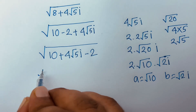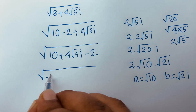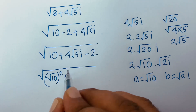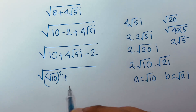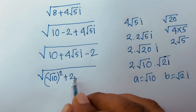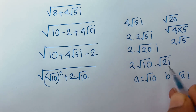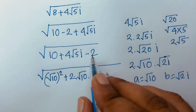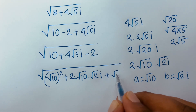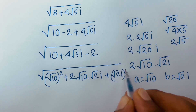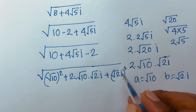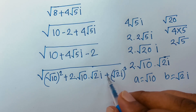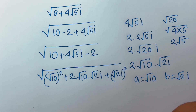Here we have (√10)² and 2·(√10)(√2·i) and (√2·i)². Note that i² = −1, so (√2·i)² = −1×2 = −2. The square root cancels and we find the value 2.